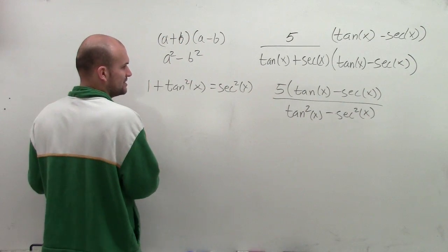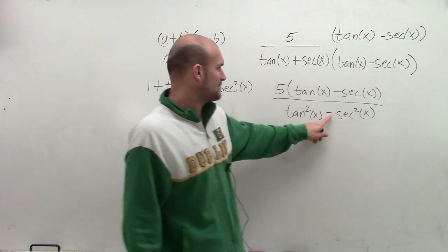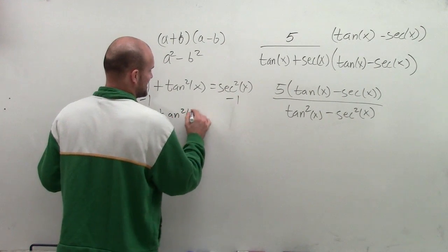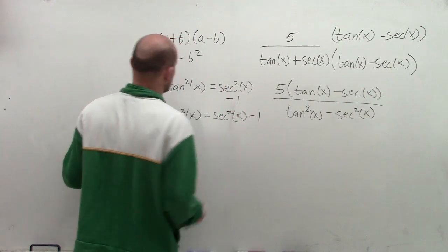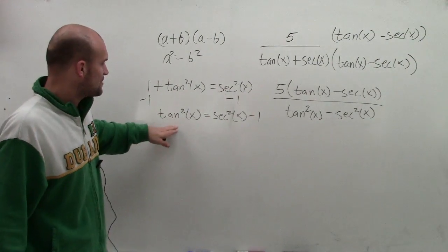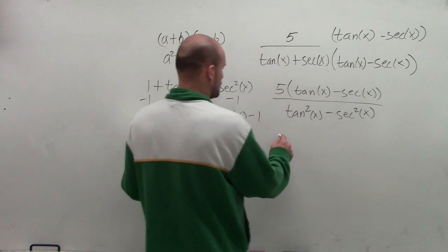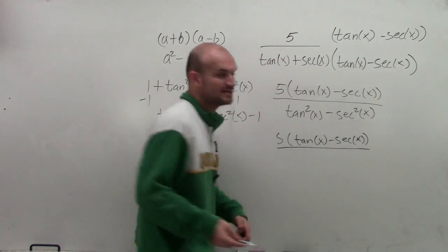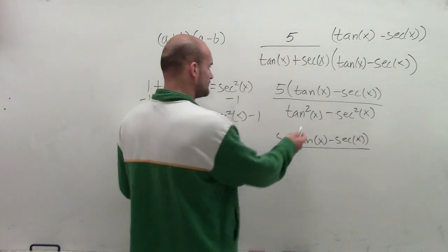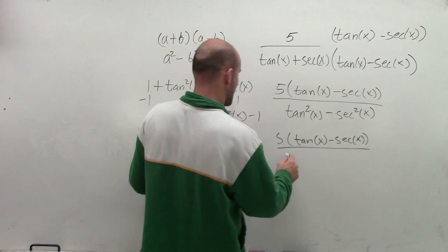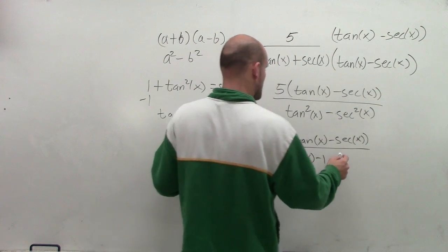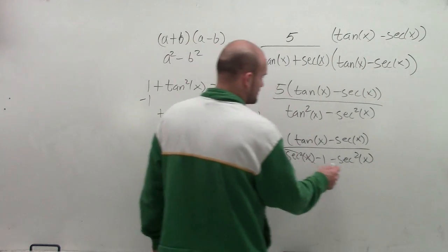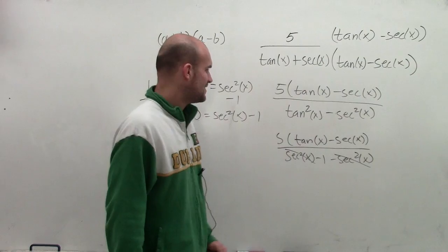Actually, let's represent tangent squared differently. Rather than substituting in for secant — which would give a negative 1 and require distributing — and rather than representing 1 plus tangent squared in for secant, let's use tangent squared equals secant squared of x minus 1. Keeping the numerator the same — 5 times (tangent of x minus secant of x) — I rewrite the denominator as secant squared of x minus 1 minus secant squared of x. The secant squared terms subtract out to zero, leaving just negative 1.